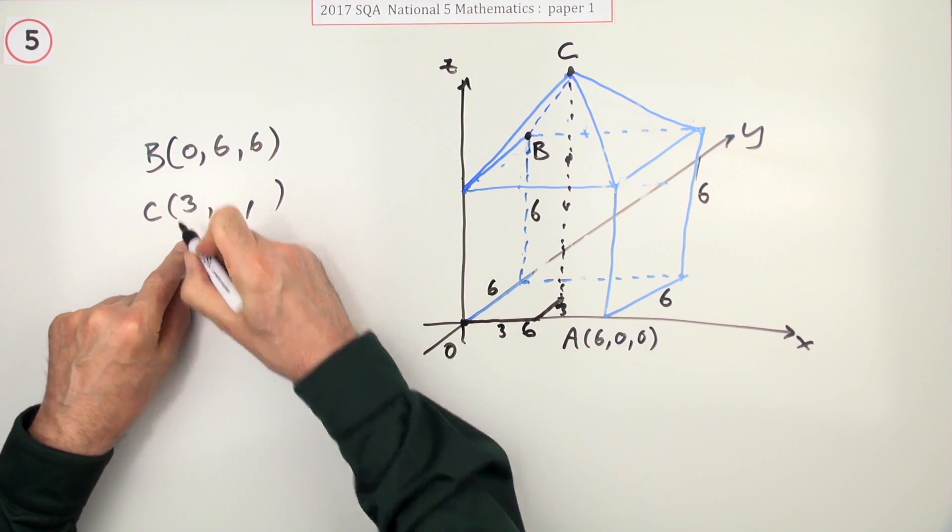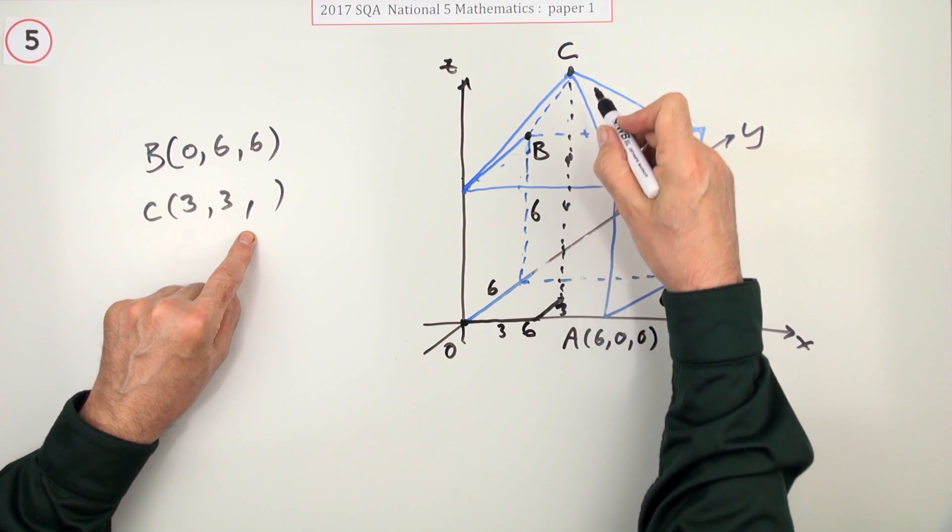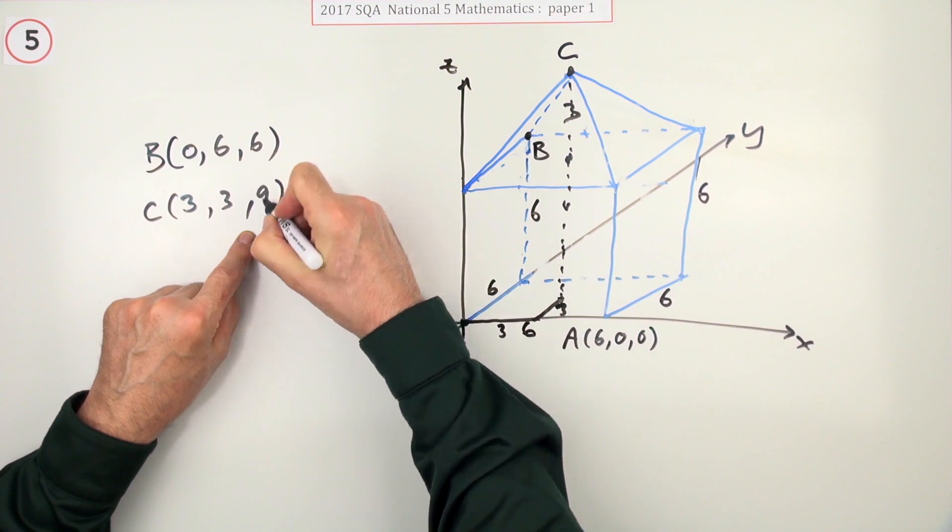So how do you get to C? 3 along, 3 back, then up 6, and it said the pyramid was half the height, so 6 plus another 3 is 9.